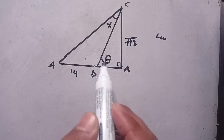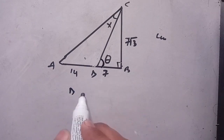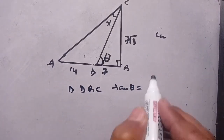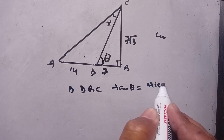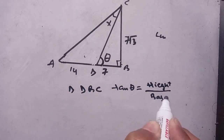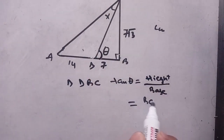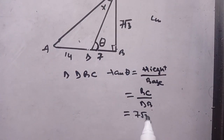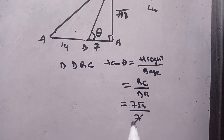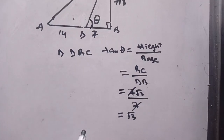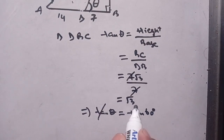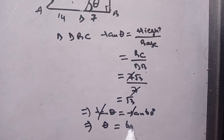Let us suppose that this angle is theta. Now we take triangle DBC. Here, tan theta is equal to height divided by base. The height is BC and the base is DB, which gives us BC divided by DB, which is 7 root 3 divided by 7. We can cancel out the 7s, giving us square root of 3. So tan theta equals square root of 3, which equals tan 60 degrees, which implies theta is equal to 60 degrees.